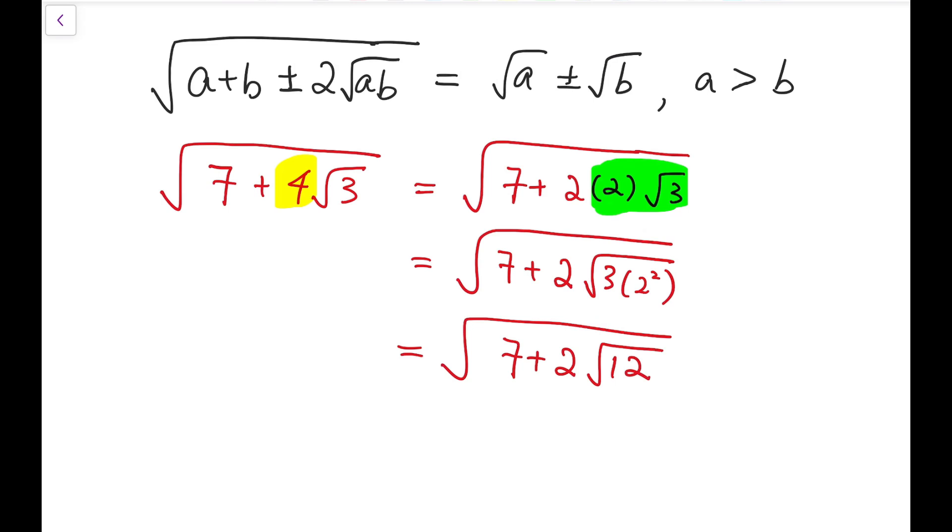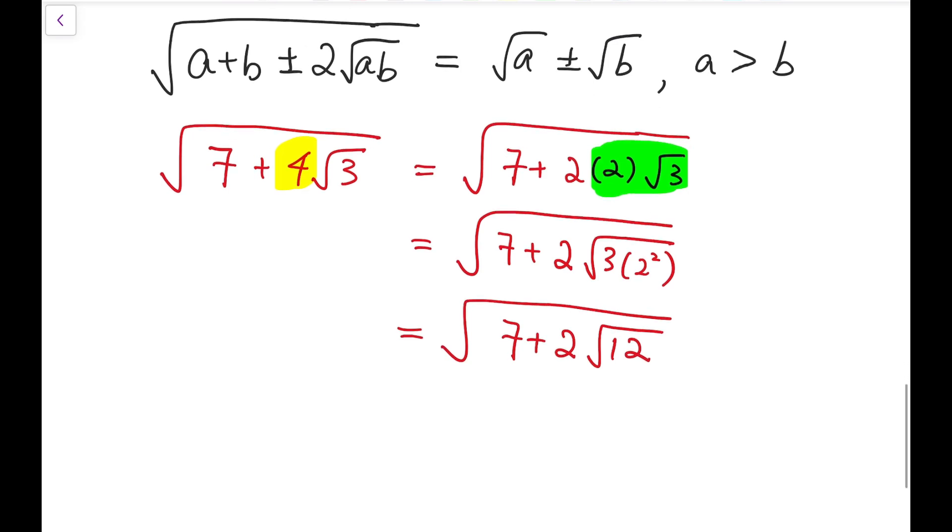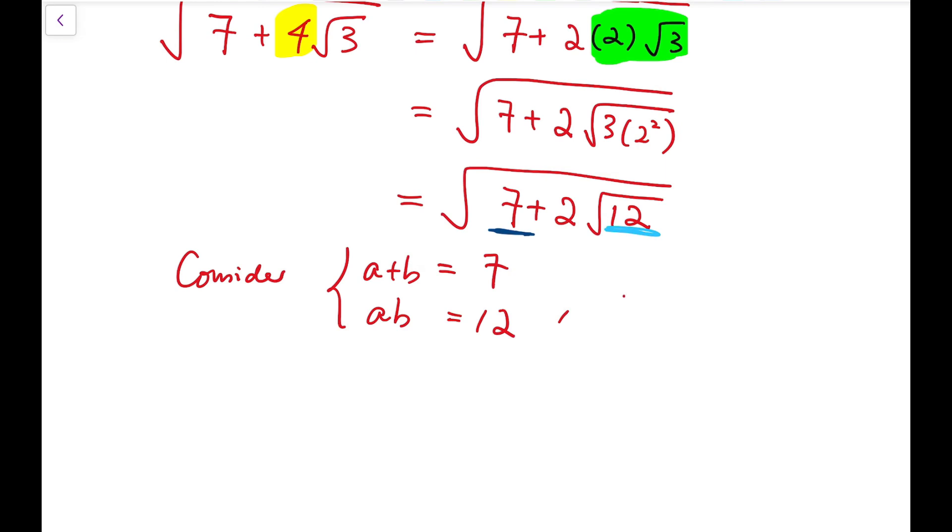Now from this, I can go back to our formula, which is to consider the system: two numbers with sum equals 7 and the product to be equal to 12.